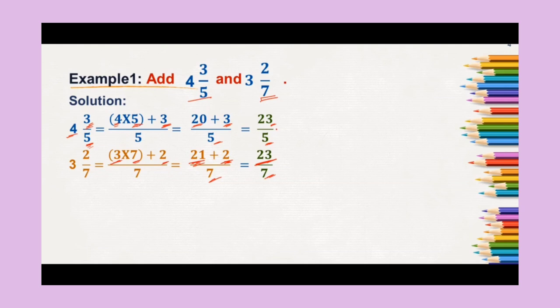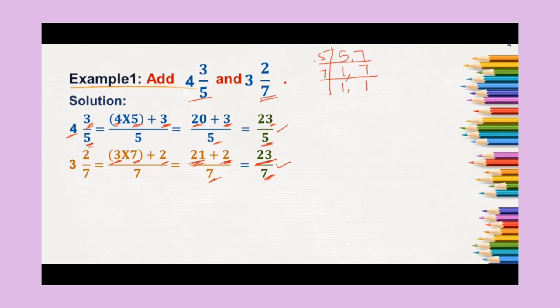Now we need to add 23/5 and 23/7, but the denominators are different. So we will have to find their LCM. The LCM of 5 and 7: 5 ones are 5, and 7 ones are 7. So we multiply 5 by 7, which gives us 35. The LCM of 5 and 7 is 35.